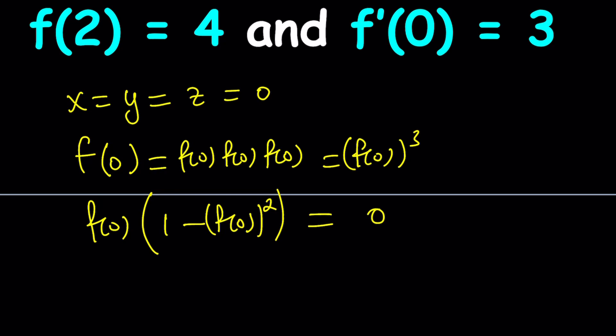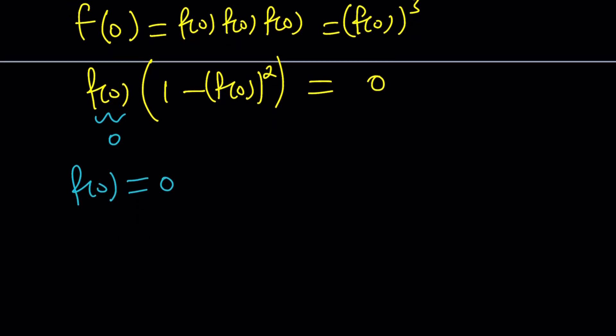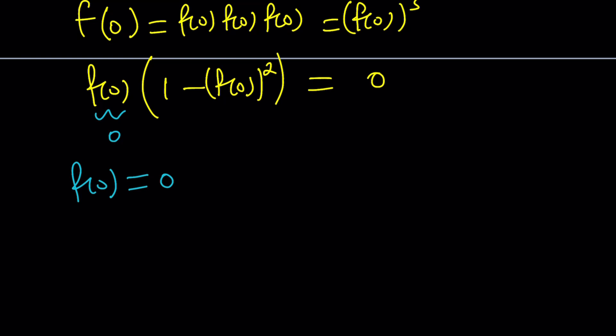We have two factors. If we set each factor equal to 0, then we're going to get the following. First of all, f(0) will be 0 from here, right? And then from the second one, f(0) squared can be 1, which implies that f(0) is either 1 or negative 1. So we're going to look at each one of these.